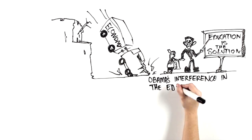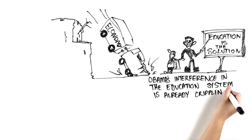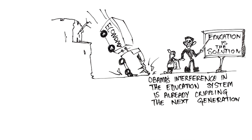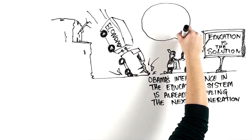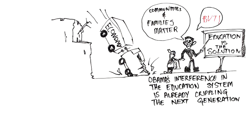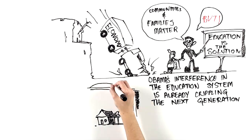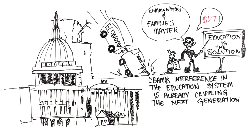Obama's interference in the education system is already crippling the next generation. Obama pays lip service to recognizing that communities and families matter, but he's done everything he can to substitute the federal government for those communities and families.